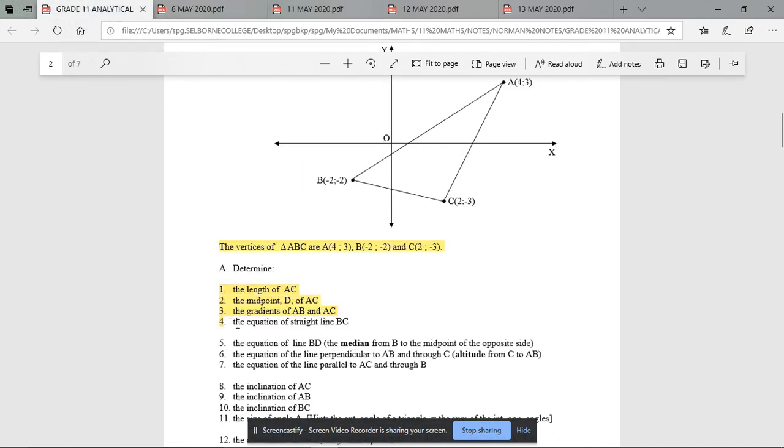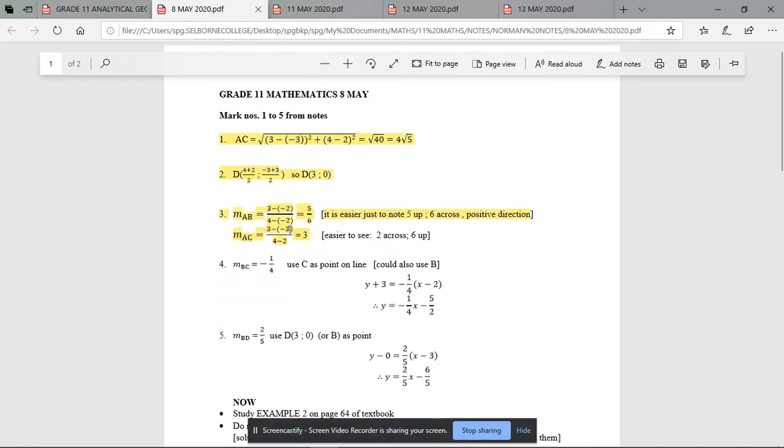Number 4, work out the equation of the straight line BC. So in order to work out the equation of a straight line, we need to fill in the Y equals MX plus C. So we need the M, the gradient, and we need the Y intercept, the C. So first of all, the gradient is a negative direction. We can see it from the line. So let's work out the gradient. BC is equal to negative a quarter.